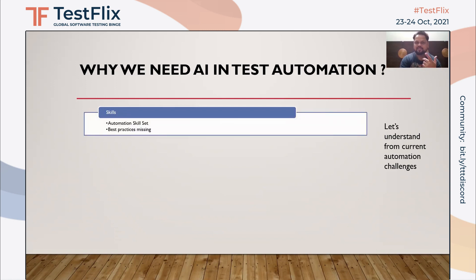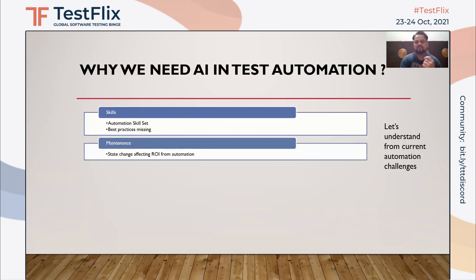The first challenge is skill set. Automation skill set is an area we need for a particular domain, and even if we have something ready, as humans we might miss some automation best practices. Then there is maintenance — a critical example is where locators change after releases and the automation tester has to go back and update them, which is a challenging and time-consuming effort.